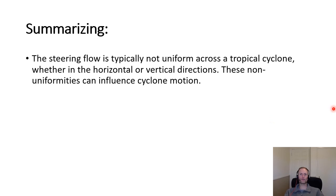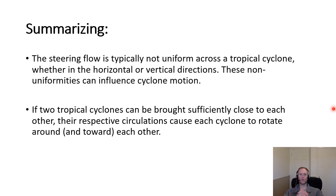That wraps up everything for tropical cyclone motion. Convective and land-associated asymmetries can also lead to variance in motion under conditions of vertical wind shear and landfall, respectively. However, these — along with all the factors described in this video — are small contributors to tropical cyclone motion as a whole. This concludes both tropical cyclone motion and the semester. Thank you for your attention and patience through the online portion of these last six weeks. I hope these videos proved informative and engaging, and it's been a pleasure teaching you all this semester.